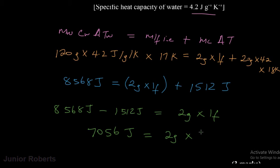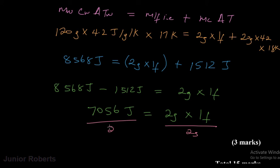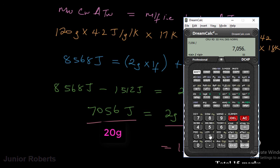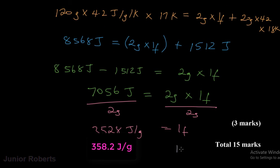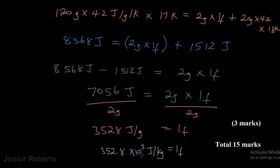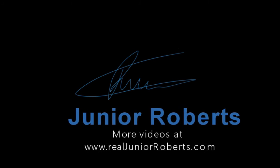Dividing both sides by 20 grams, the latent heat of fusion equals 7056 divided by 20, which is 352.8 joules per gram. Therefore, Lf equals 3.528 × 10³ joules per kilogram, and that is our final answer.